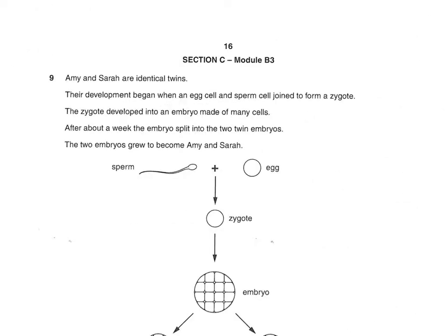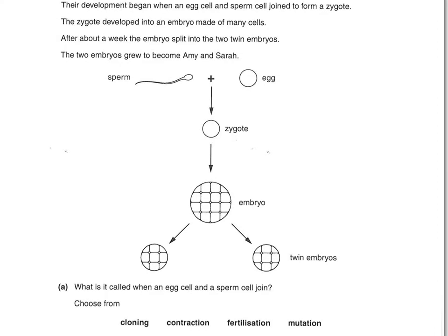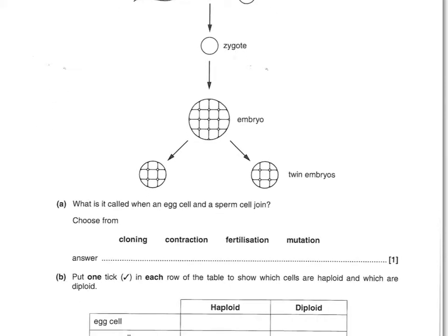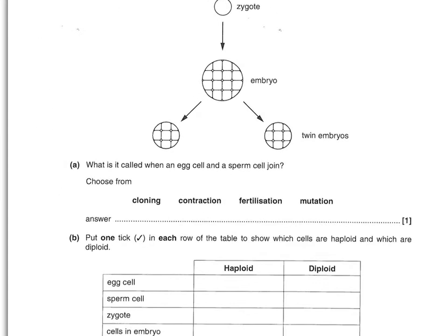We're going to start with the biology section. First question: Amy and Sarah are identical twins. Their development began when an egg cell and a sperm cell joined to form a zygote. The zygote developed into an embryo made of many cells. After about a week, the embryo split into two twin embryos, which grew to become Amy and Sarah. The question asks: what is it called when an egg cell and a sperm cell join? That is fertilisation.